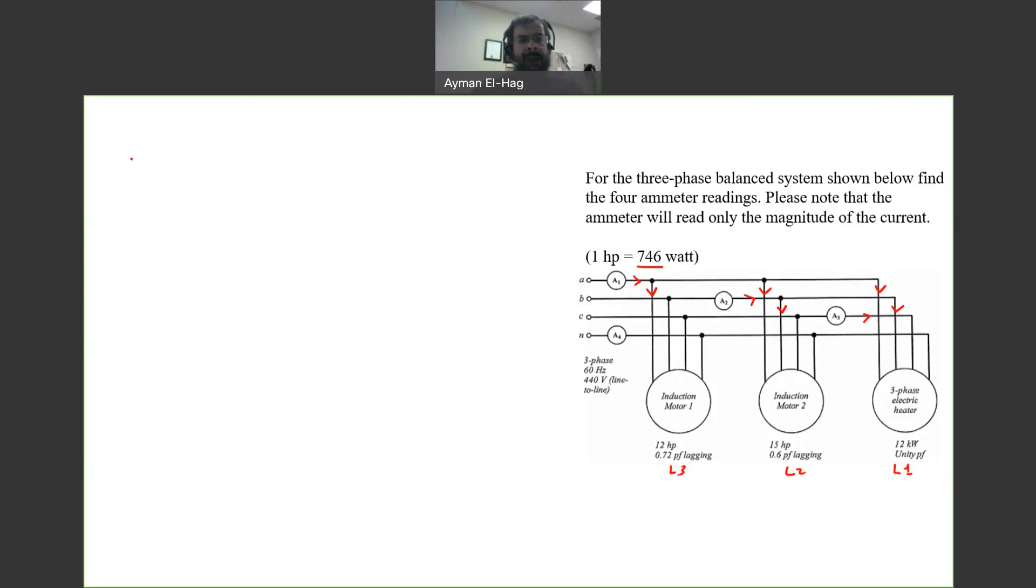We'll start with a3, so we'll start from the first load. I will call this my i1 for load one, which is measured by a3. My i1 as a magnitude is equal to the power, 12 times 10 to power 3, divided by root 3 for the three phase, and the line-to-line voltage is 440 volt.